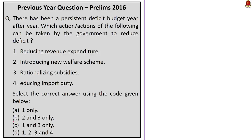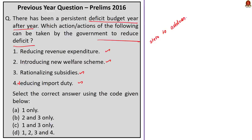Now moving on to the third and final previous year question. The question is: 'There has been a persistent deficit budget year after year. Which actions can be taken by the government to reduce the deficit?' The actions given are: reducing revenue expenditure, introducing new welfare schemes, rationalizing subsidies, and reducing import duty. It is a very simple question. They are just asking what steps the government can take to reduce the deficit. If we even have the basic understanding of the word deficit, we can answer this question.